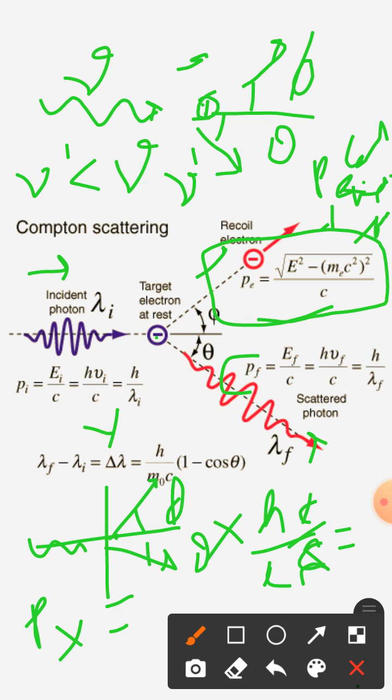And on the other hand, the momentum of photon pf equal to h upon lambda f, or initially it was pi initial equal to h upon lambda i.